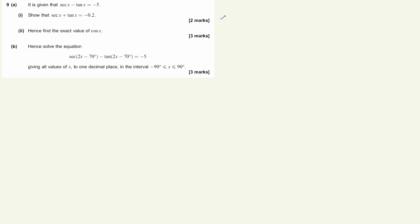Now this is a difficult question again to get started with. You've got these two values, sec x minus tan x equals minus 5 and sec x plus tan x is 0.2, and we can find the exact value of cosine. There are other ways of this, we can do some rearrangement of things, but what I'm going to do is I'm going to try and solve these as a pair of simultaneous equations.